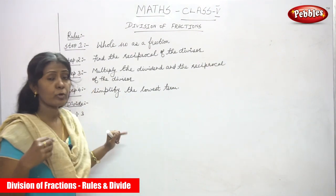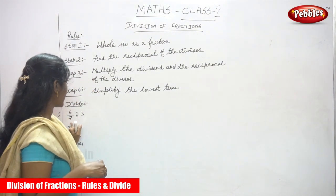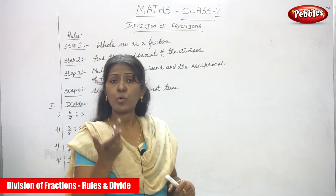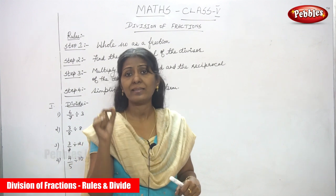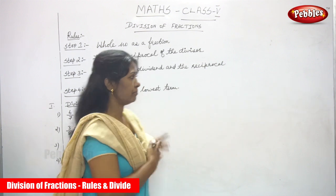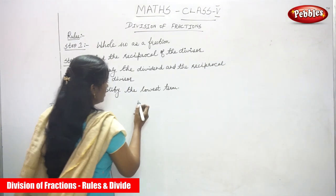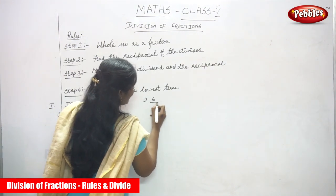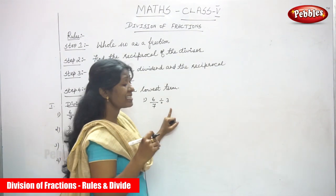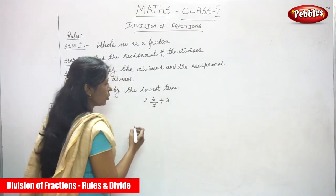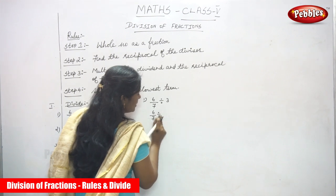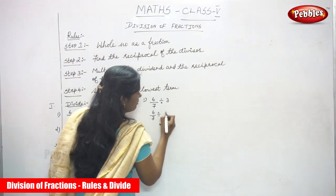Now I'm going to solve the sums. First question: 6/7 divided by 3. Here 6/7 is a fraction and 3 is a whole number. Once I solve this sum, the rules will become very clear.